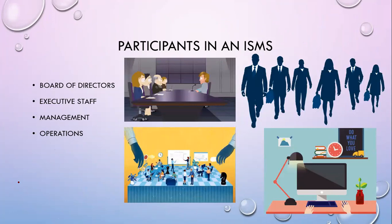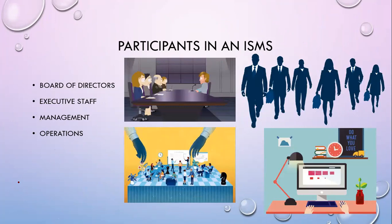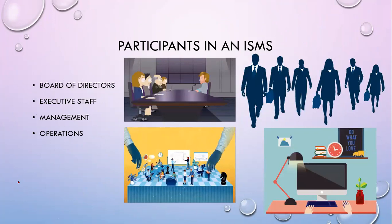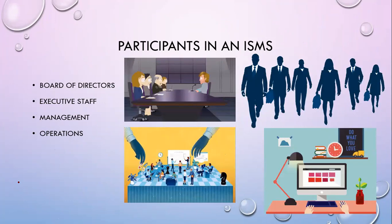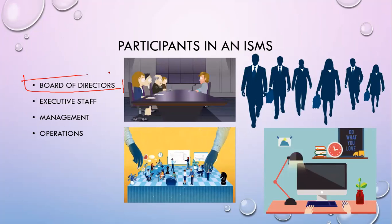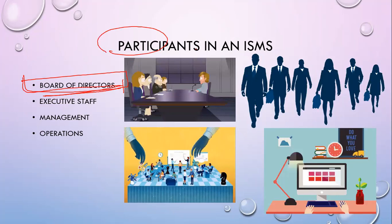Now let's go to the participants of your ISMS. You have four major participants. Let's start with the Board of Directors. Your board of directors typically provides organizational vision and guiding principles in response to managing risk on multiple fronts — from regulatory compliance to fiduciary responsibility. Your board of directors sets the vision of the business or company, and that will also serve as the main vision of your ISMS. Next is your executive staff.